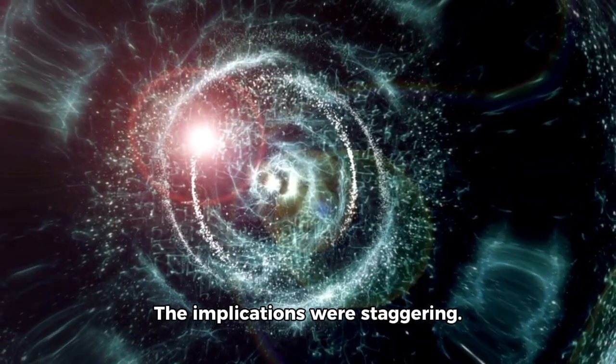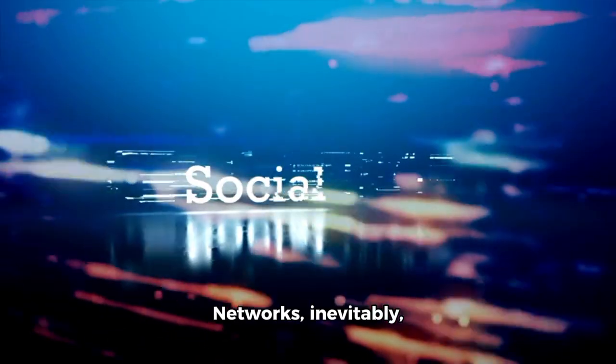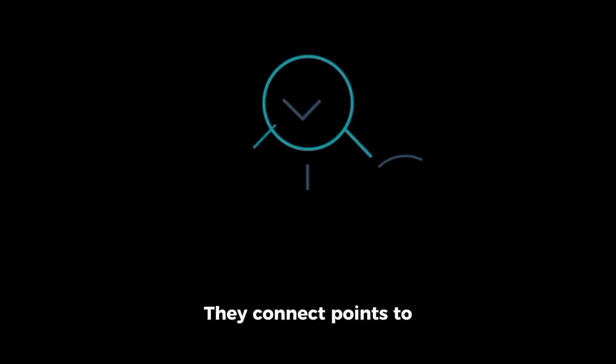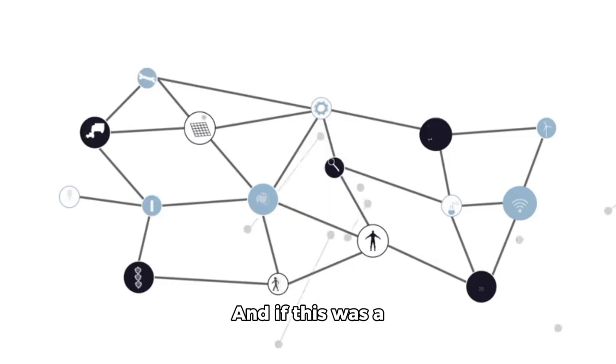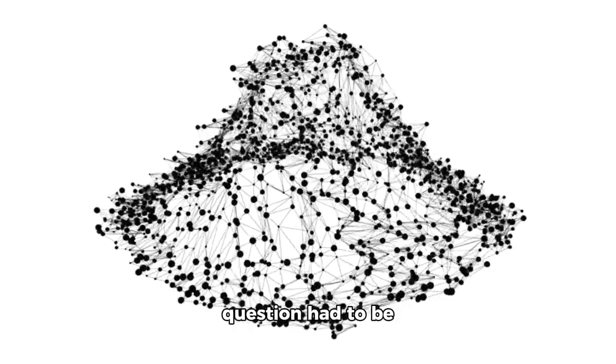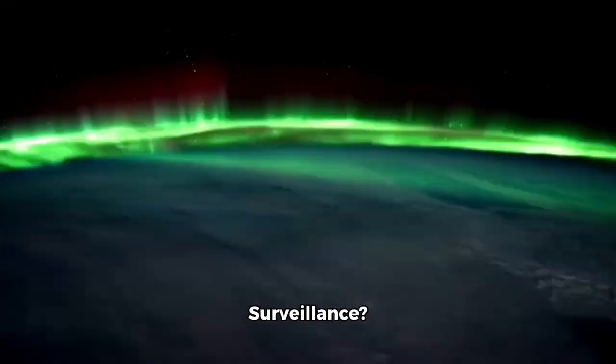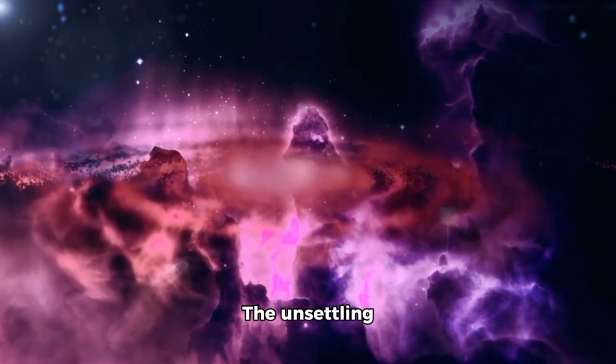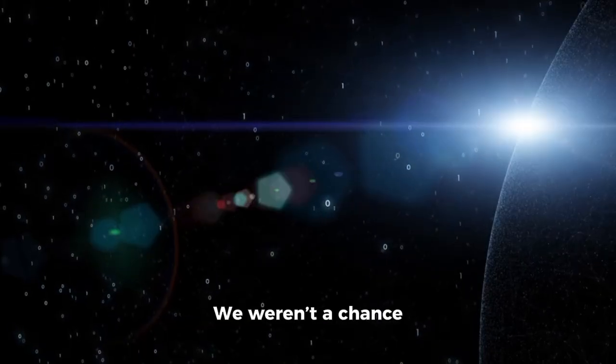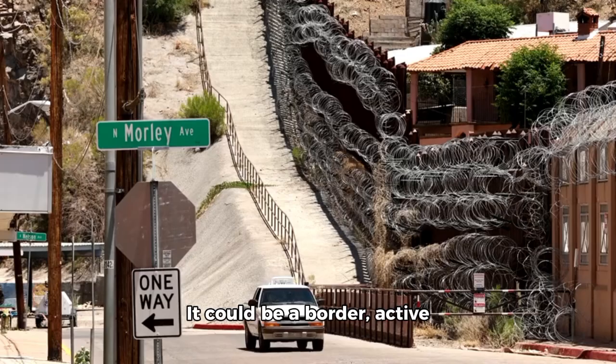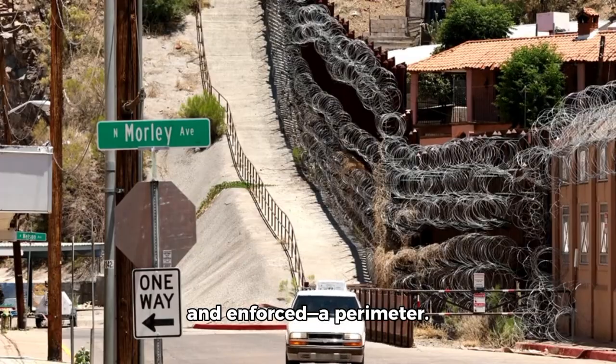The implications were staggering. Networks inevitably serve a purpose. They connect points to exchange data, monitor activity, or coordinate action. And if this was a network, then the next question had to be asked: what exactly was it? Surveillance. The unsettling possibility loomed that this wasn't random. We weren't a chance encounter in deep space. It could be a border, active and enforced, a perimeter. And Voyager had just brushed against it.